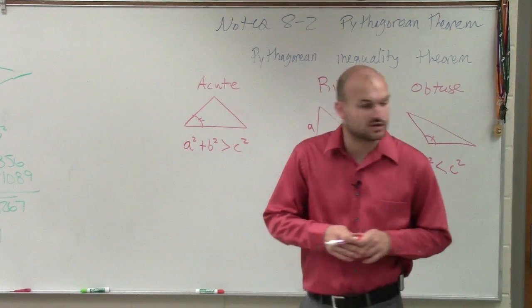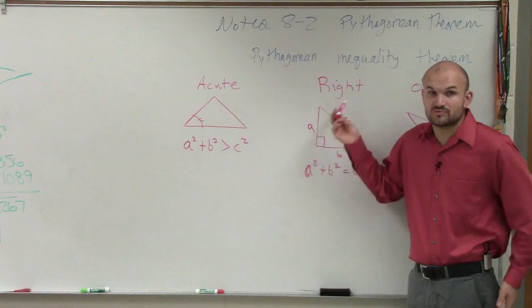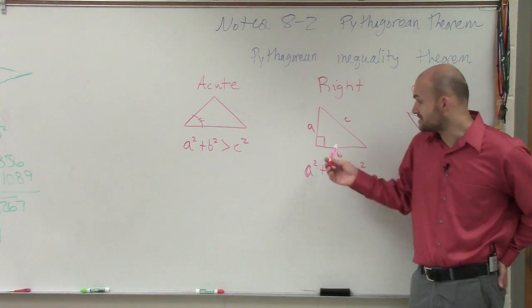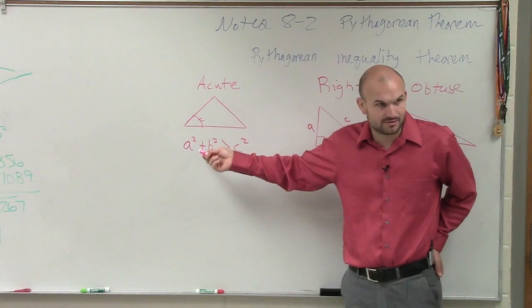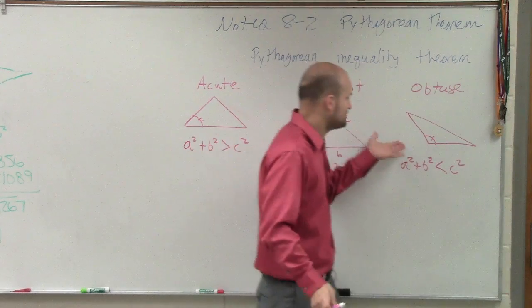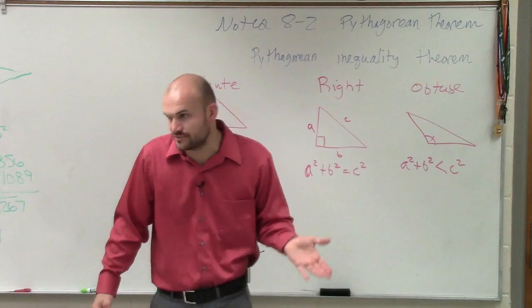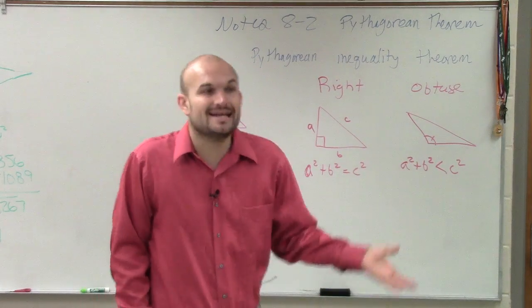So I might ask you to classify the triangle. We know we can solve problems when it's right triangles, because here it has to be equal. For it to be acute, it just has to be greater than your hypotenuse. Or for it to be obtuse, it just has to be less than your hypotenuse, any number less.